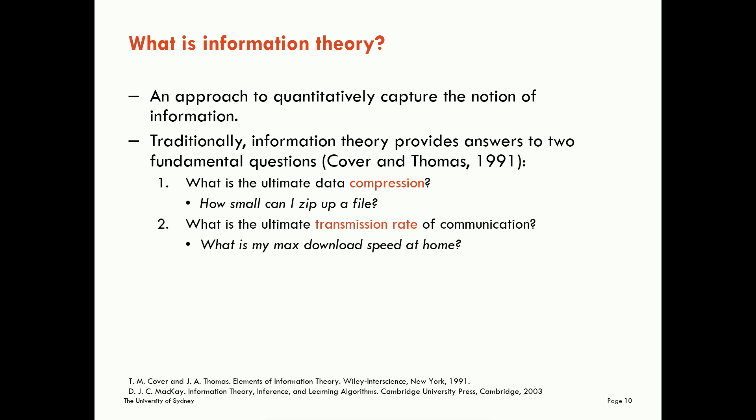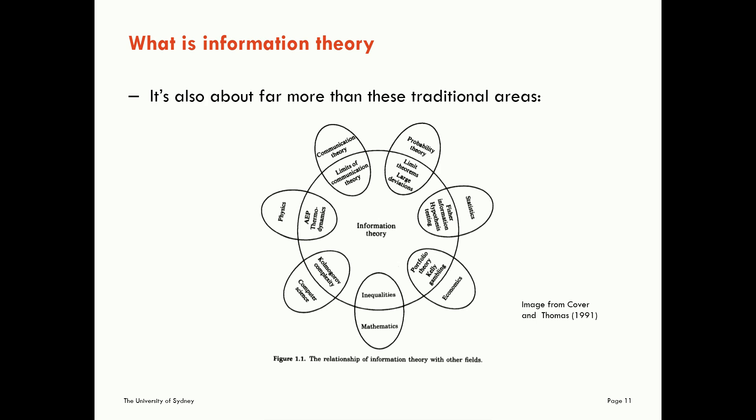Firstly what's the ultimate data compression? That is to say how small can we zip up a given file? How much can we compress it? How much information is actually there? The second fundamental question information theory asks is what is the ultimate transmission rate of communication? So what's the maximum download speed I have over my telephone line at home for example?